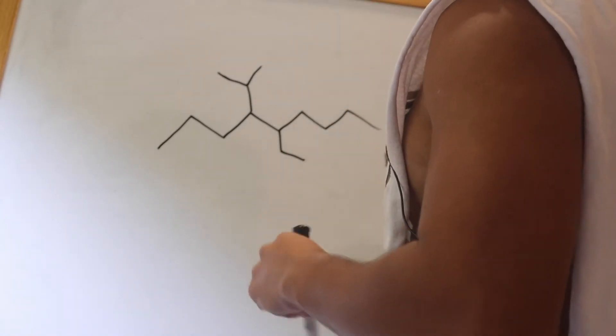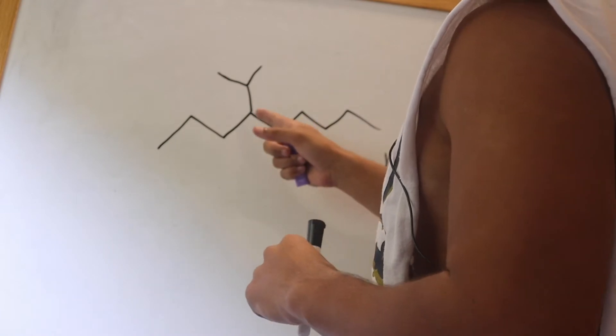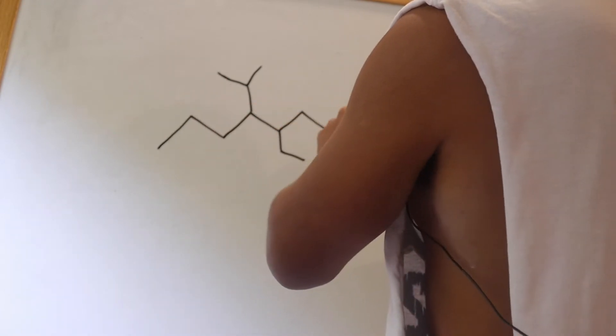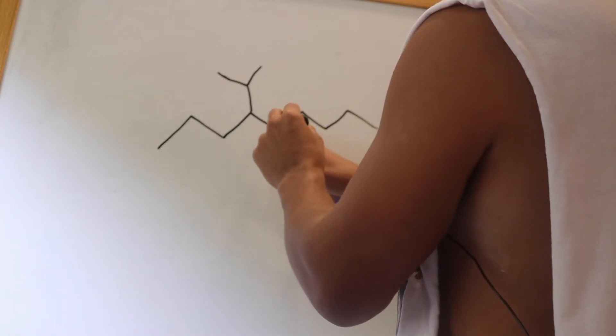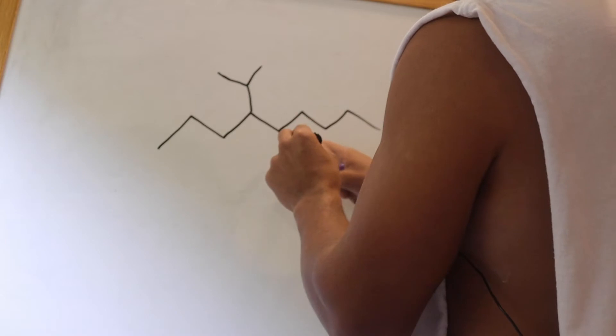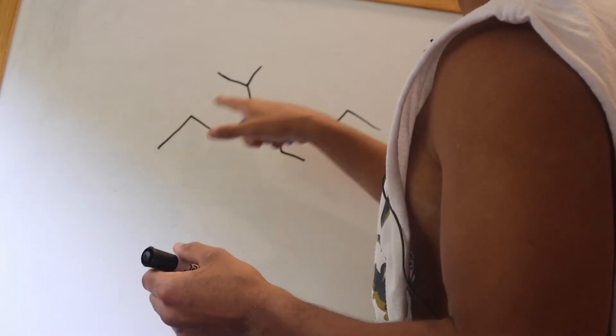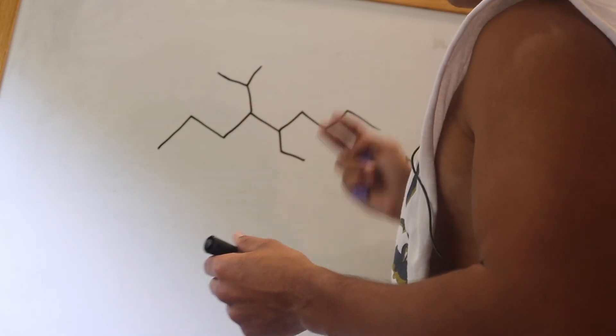So you want to start numbering them where the first functional group you see is going to have that lowest number. So instead of coming here, 1, 2, 3, 4, 5, even though this ethyl group comes first in the naming, it's on the fifth carbon, but this propyl group over here is 1, 2, 3, 4 on the fourth carbon.